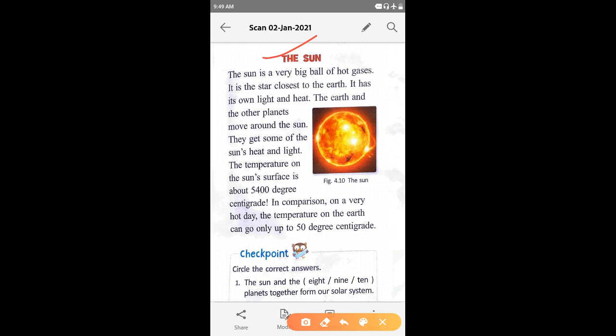Sun jo hai wo bahut bada garam gaso ka gola hai. Ye earth se bahut hi nazdik star hai, earth se bahut hi nazdik hai. It has its own light and heat.